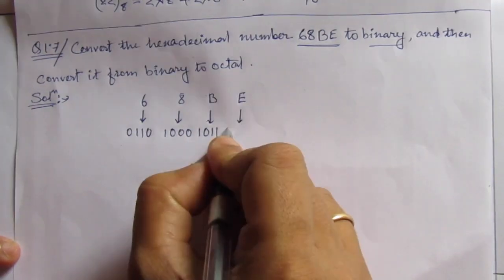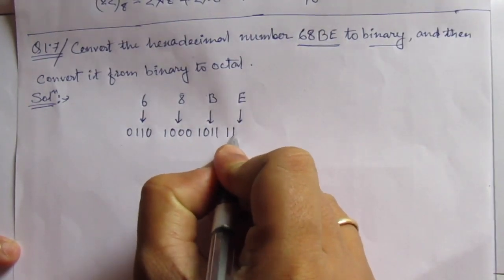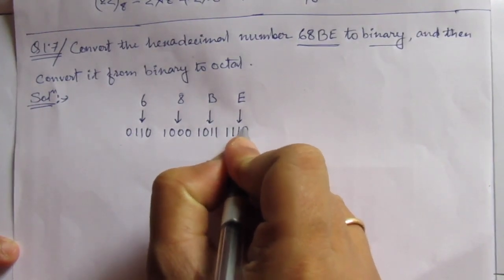Then E is nothing but 14. This is 8, then 4, 12, then 2, 14, then 0. So it's 1110.